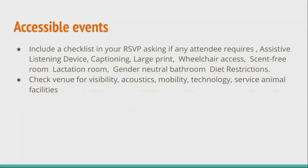The last point is not strictly about technical writing, but technical writers sometimes help organize events. When organizing an event, include an accessibility checklist: ask if any attendee requires an assistive listening device, captioning, large print, wheelchair access, and so on. If it's a venue-based event, check for all relevant physical accessibility features. This is not about web accessibility specifically, but it's just general good practice.